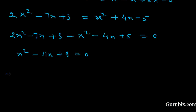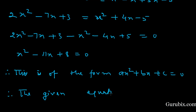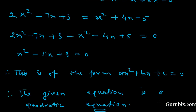So we get x² - 11x + 8 = 0, which is of the form ax² + bx + c = 0. This means the given equation is a quadratic equation. So this is the solution of the question. Thank you.